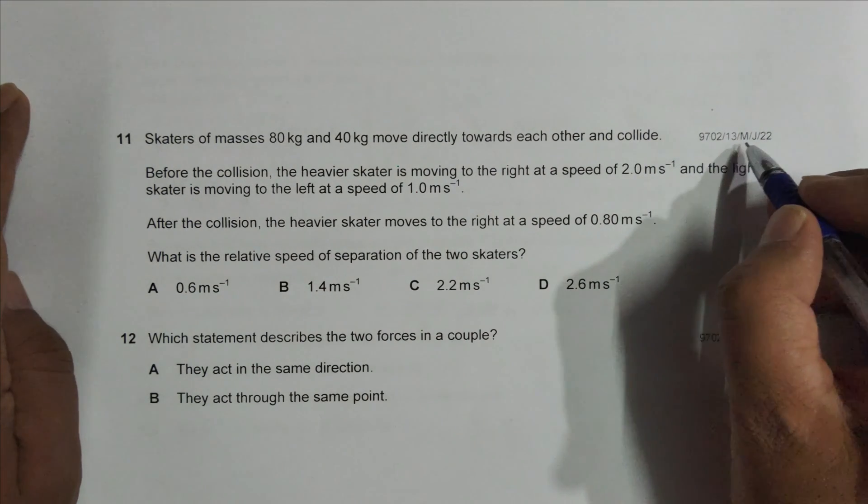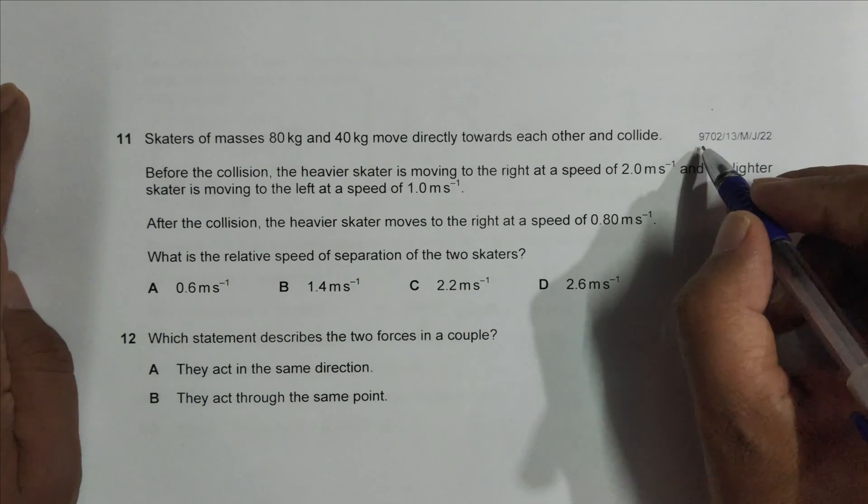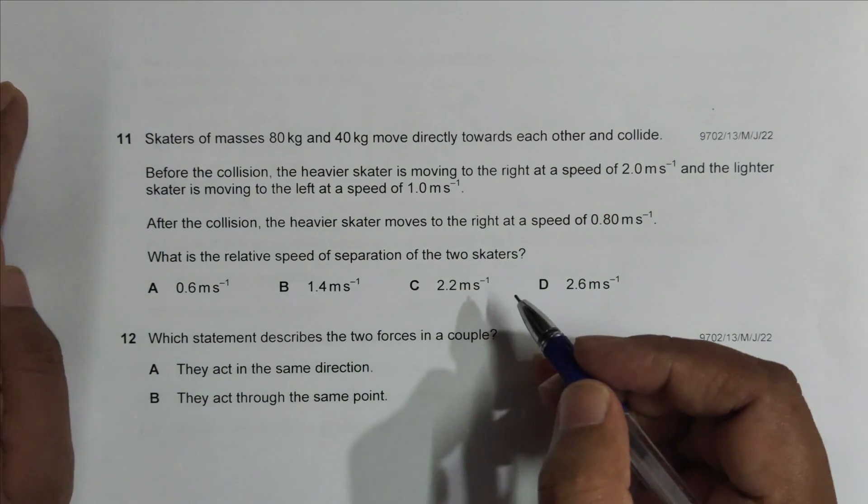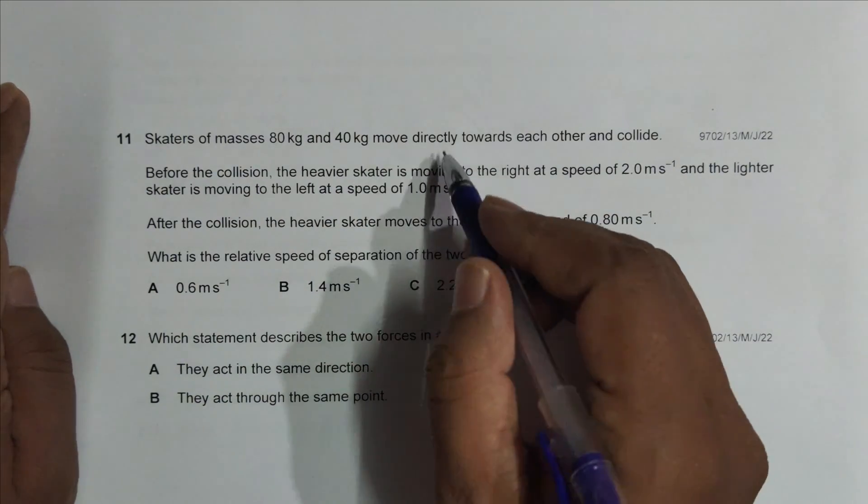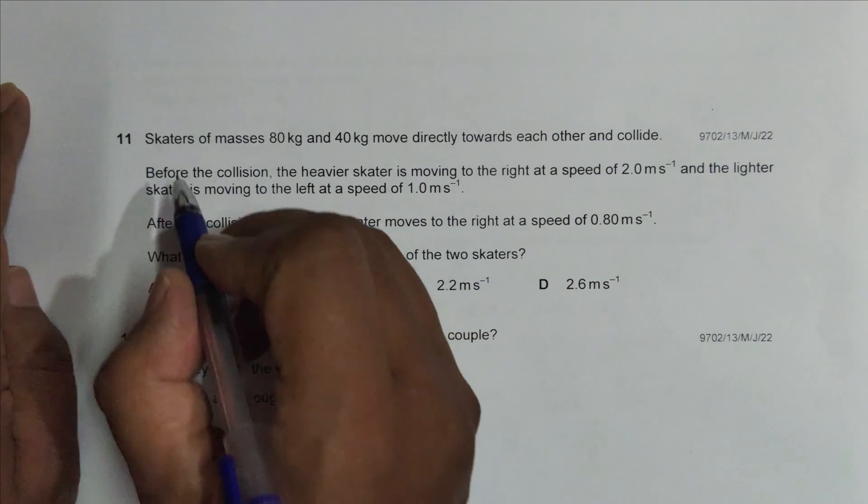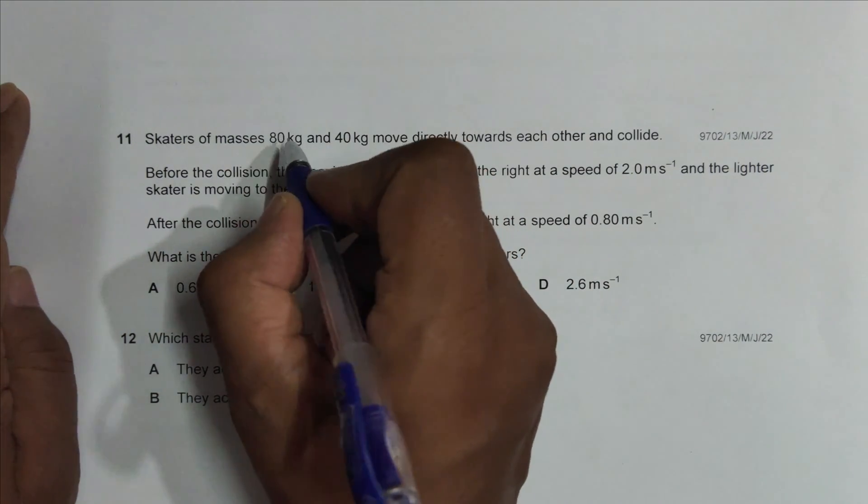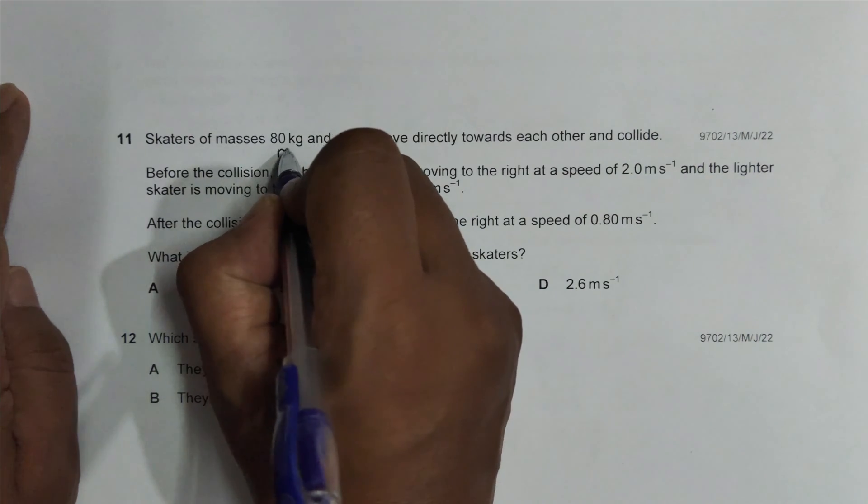Hello folks, this is your 2022 May June paper 1.3 and the question number is 11. This question is concerned with the chapter dynamics about collision. It says skaters of mass 80 kg, we name it as m1,